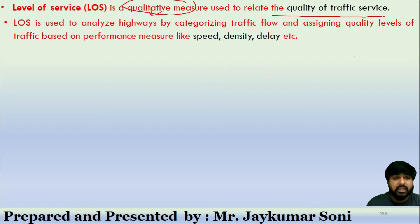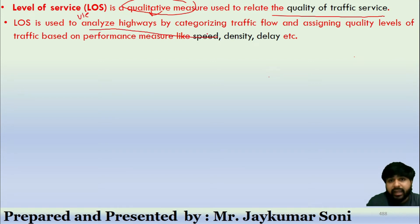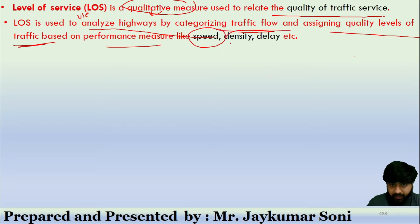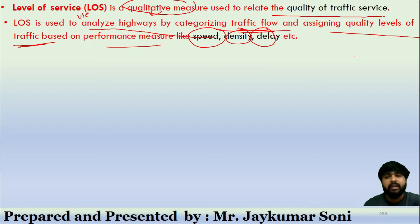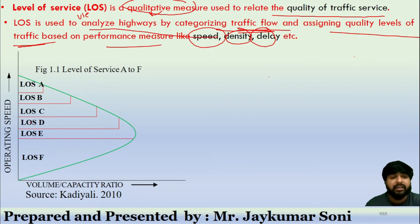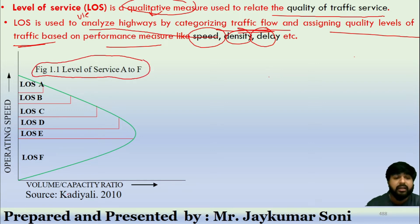Level of service is used to analyze highways by categorizing traffic flow and assigning quality levels of traffic based on performance parameters such as speed, density, and delay. If we plot the graph of operating speed versus V/C ratio — that is volume-capacity ratio — we find a level of service graph that ranges from LOS A to LOS F.